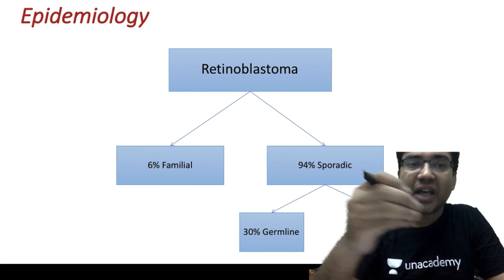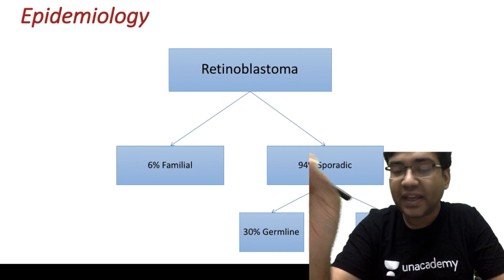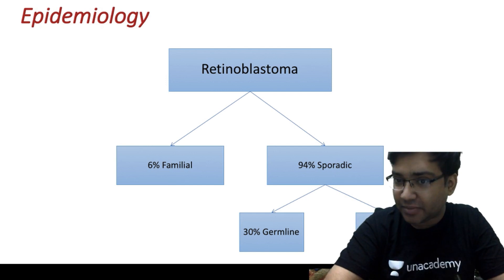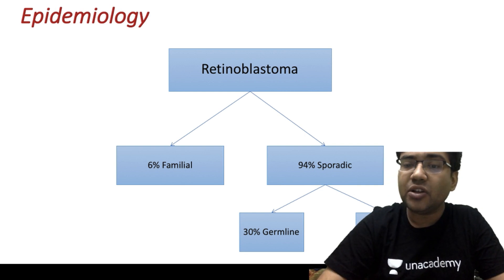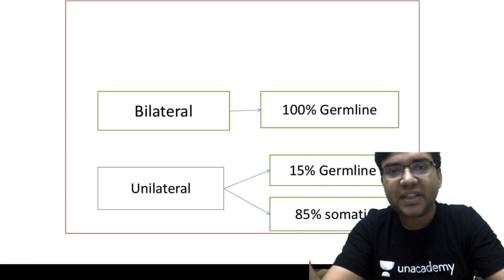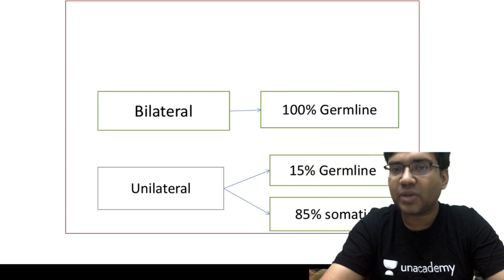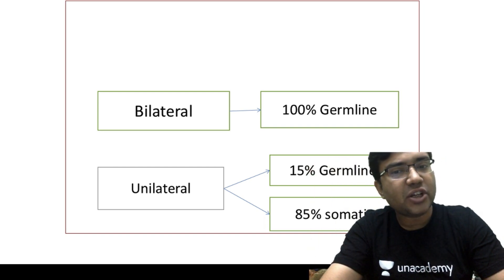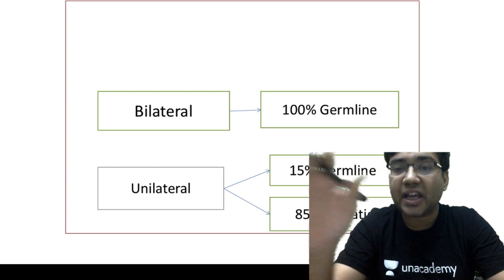In the epidemiology of retinoblastoma, it is 6% familial and 94% sporadic. In this 94% sporadic group, 30% of patients have germline mutations and around 60–70% have somatic mutations. Remember, if there is a bilateral retinoblastoma, 100% of those patients have a germline mutation.